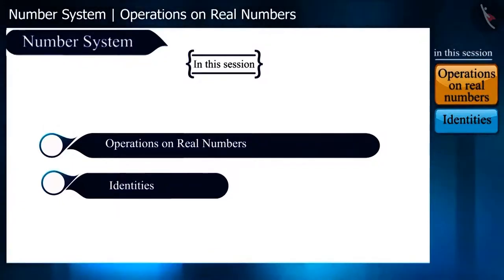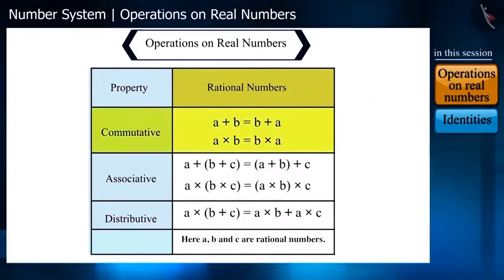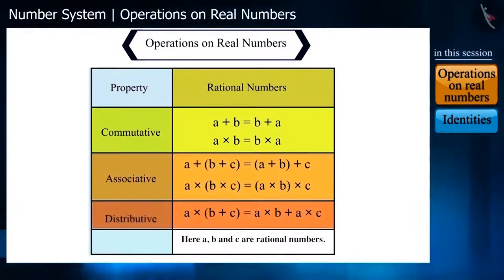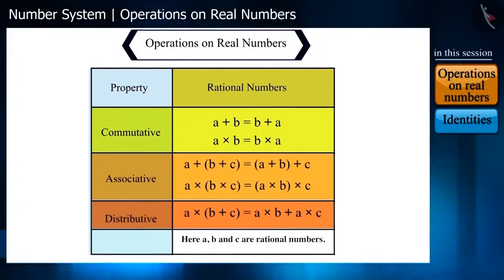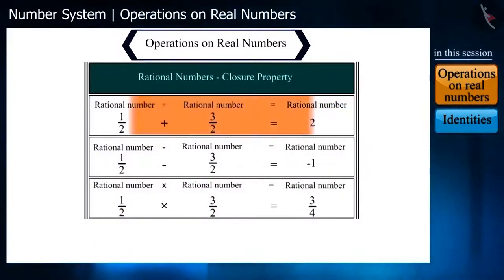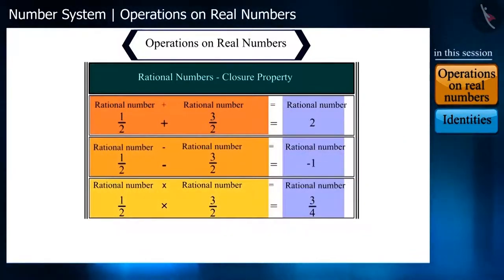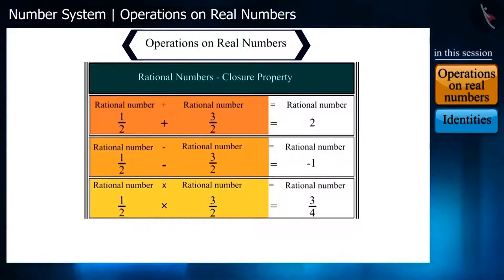We have learned that rational numbers satisfy the commutative, associative and distributive properties for addition and multiplication. If we add, subtract or multiply any two or more rational numbers, then the resultant number is also a rational number.